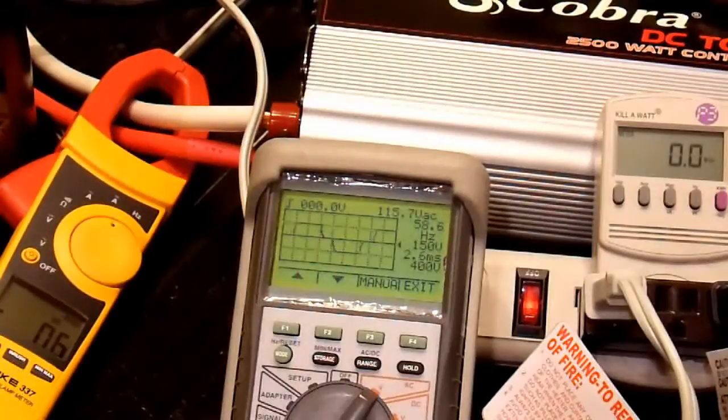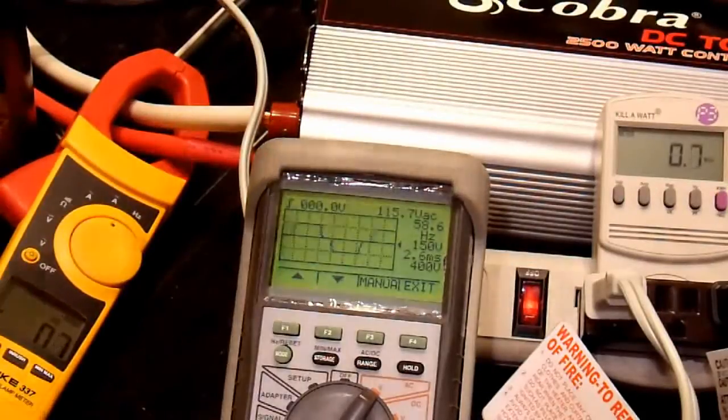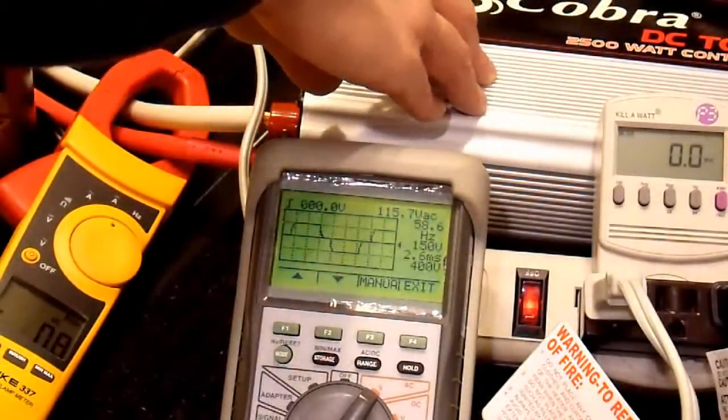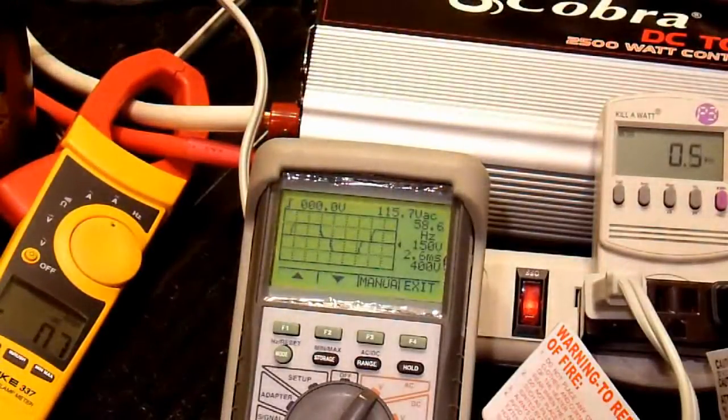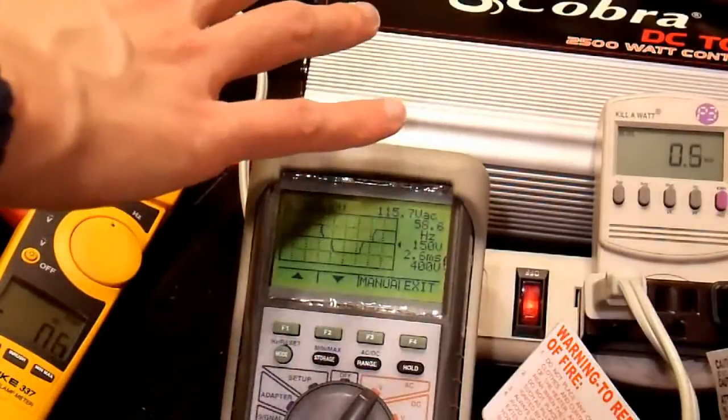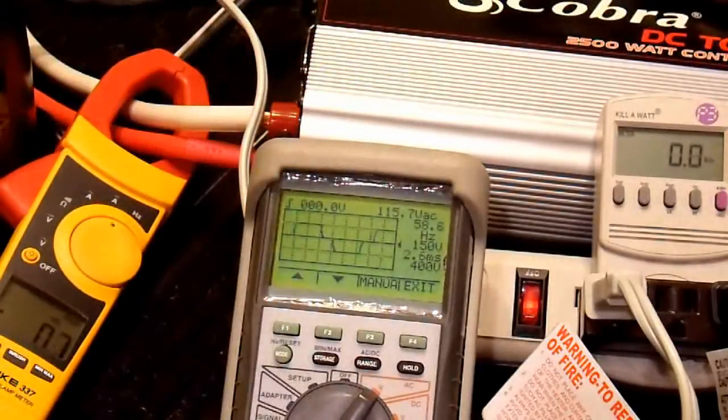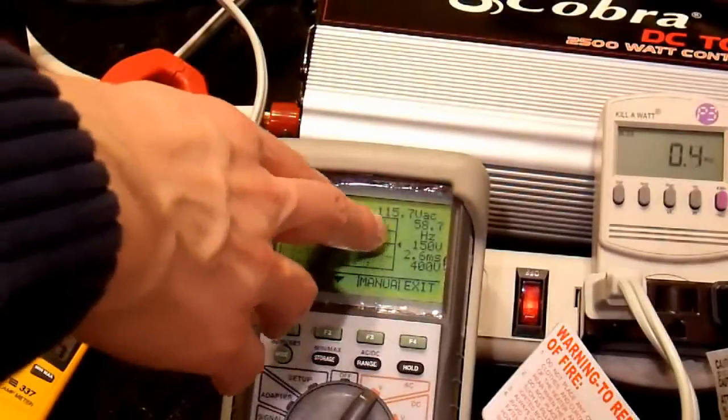So we had noted before that the output voltage of this inverter sagged under a 1500 watt load when I had my heater on high, and I thought that was because the input power wasn't adequate. So I have much better input power now. Let's turn on the same load and see if the output voltage sags down from its 115 volt level.